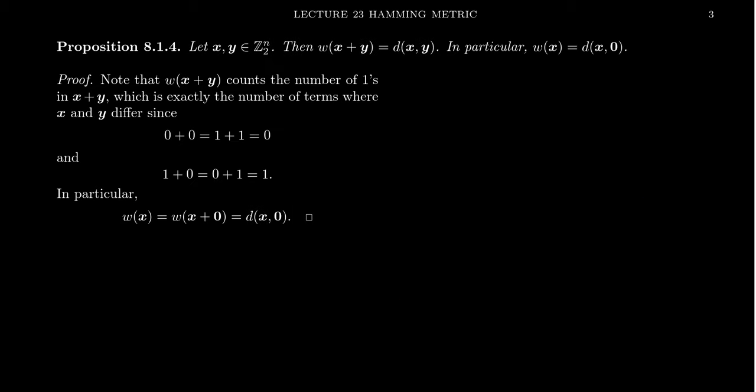Now, it's not just a topological thing, the metric space. We also have some algebra going on here. And these things do work together. So if you have two words, X, Y, in Z2N, then it turns out that the weight of the sum X plus Y is identical to the distance between the two words, X and Y. In particular, the weight of a single word is just its distance from zero.